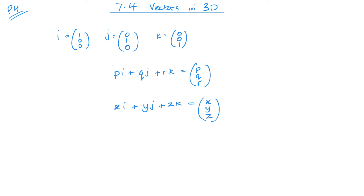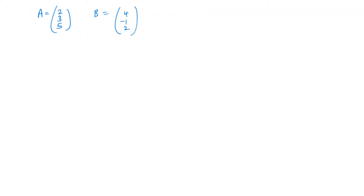A lot of the same rules apply to what we've already looked at. So if we want to add, subtract or multiply our vectors, the same rules apply. So if I have two vectors A and B, if I want to work out A plus B, it's exactly the same process as with 2D vectors — the only difference is going into that third dimension, that third set of values.